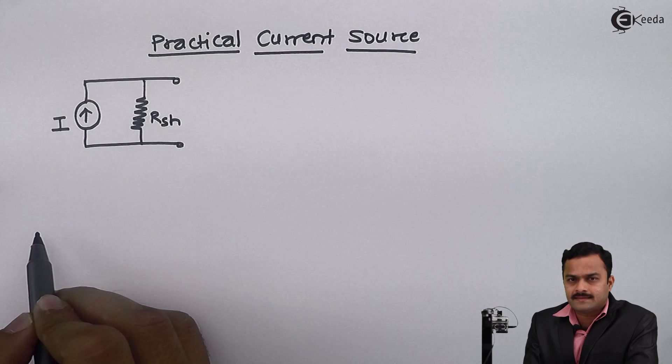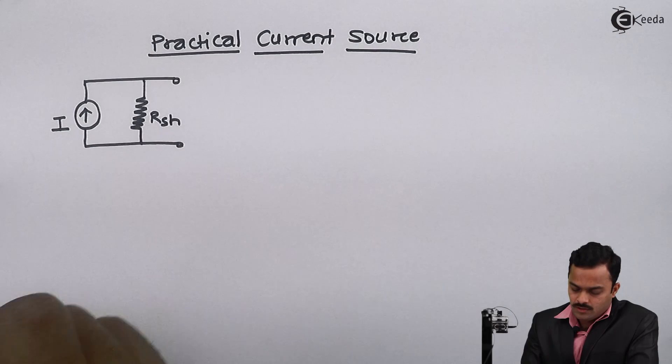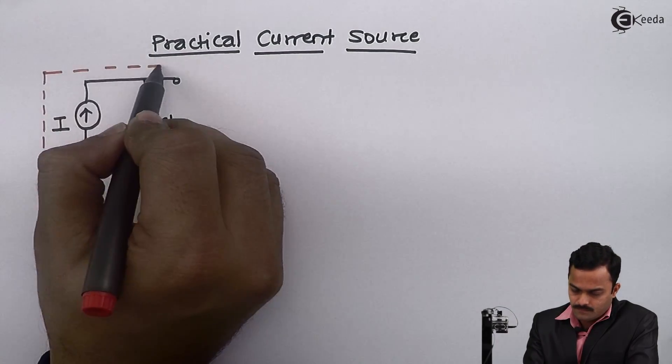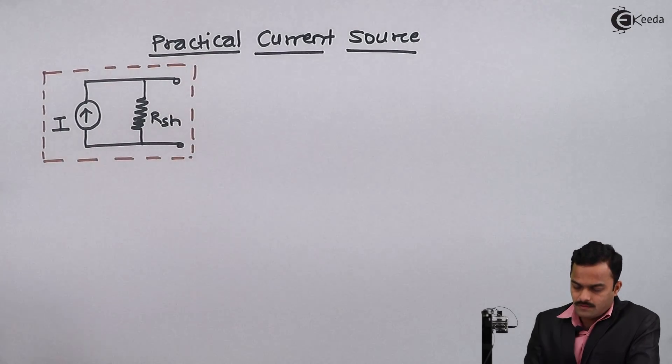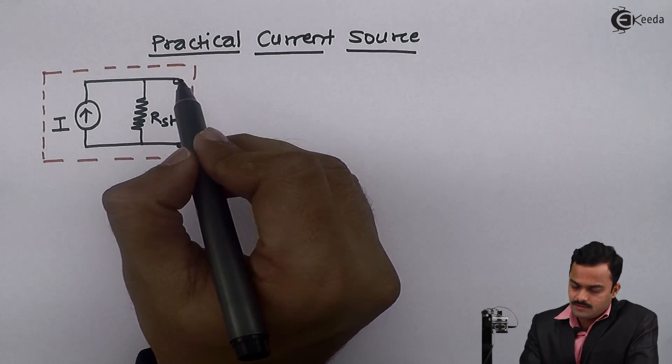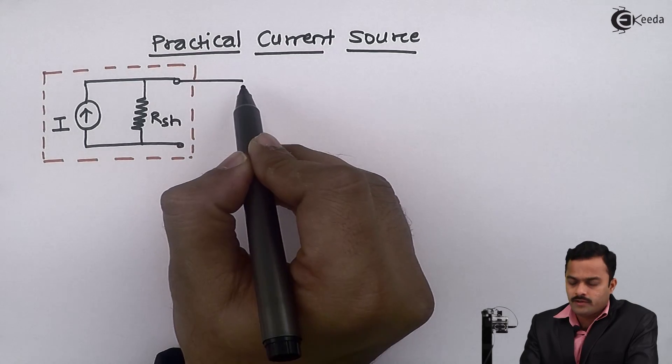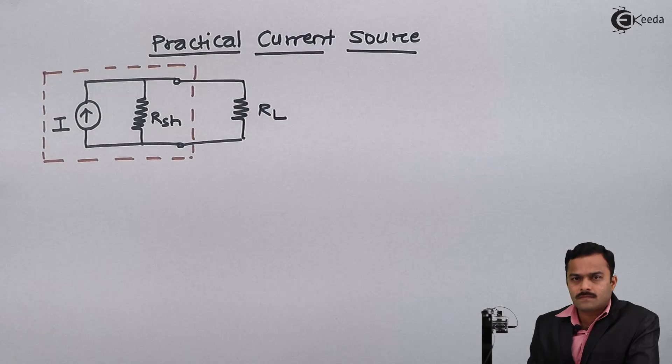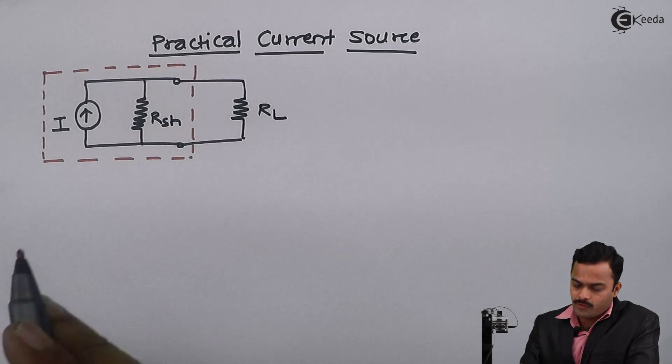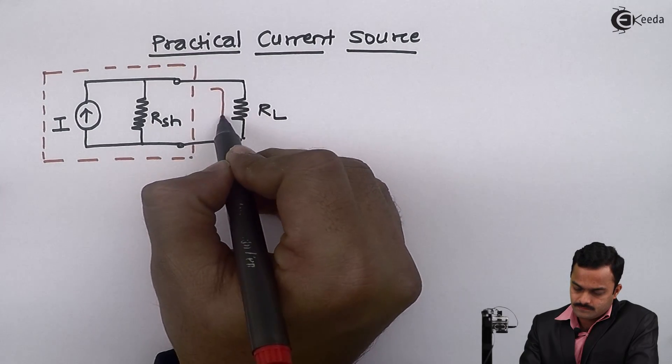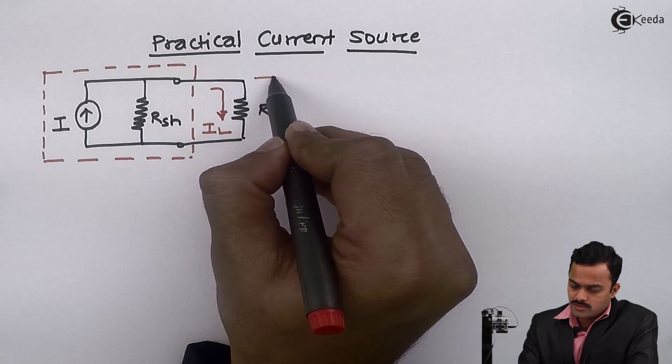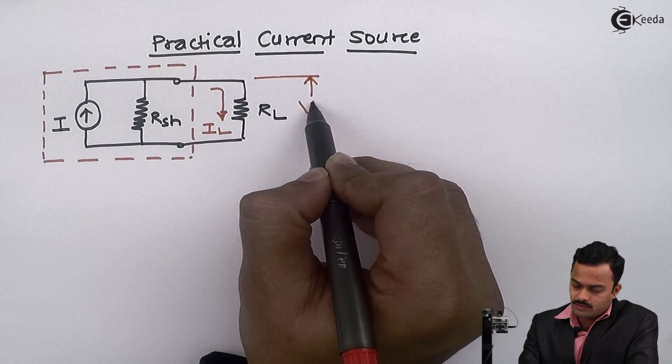I will name it as Rsh, sh stands for shunt means parallel, so this will be a practical current source. Now this practical current source I am connecting to a load resistor RL so that there will be some current flowing through the RL. I name it as IL because of which I will get voltage across RL.